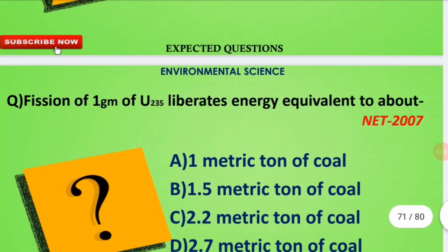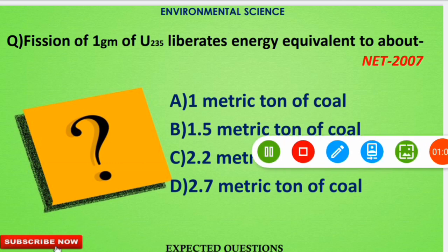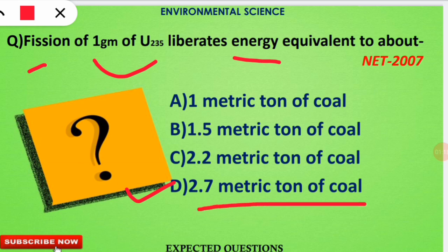The next question is: the fission of 1 gram of Uranium-235 liberates energy equivalent to about how much? This question came in the NET 2007 examination. The correct option is option D — 1 gram of Uranium-235 undergoing a fission reaction releases energy equivalent to 2.7 metric tons of coal.